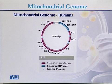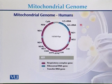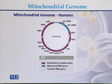In the mitochondrial genome diagram, respiratory complex genes are marked with purple, while ribosomal RNA genes are also visible. There is a gene for 16S ribosomal RNA and a gene for 12S ribosomal RNA. The total size of the mitochondrial genome shown here is approximately 6.5 Kb.